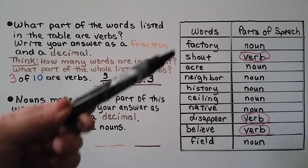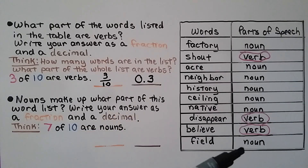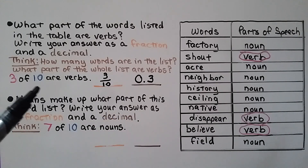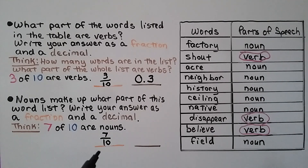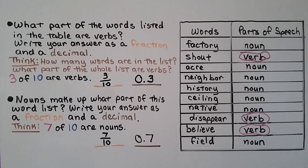Nouns make up what part of this word list? If there are ten words in all and three are verbs, and the rest are nouns, then ten minus three leaves seven. Seven of ten are nouns. We write it as the fraction seven-tenths and as the decimal 0.7 — zero in the ones place, a decimal point, and a seven in the tenths place.